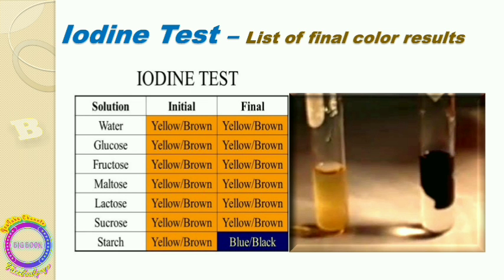The final color results are: glucose, fructose, maltose, lactose, and sucrose will show yellow or brown color — essentially the color of the iodine itself. Starch gives a blue, dark blue, or black color after reacting with iodine. Other polysaccharides also react with iodine and give colors depending upon their structure. This is a brief note on the iodine test.